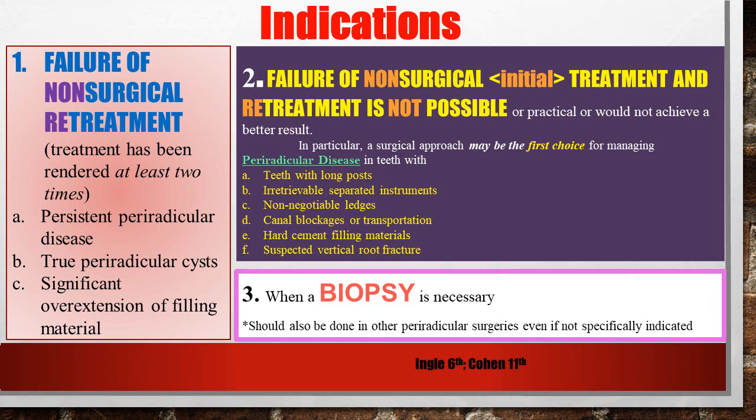Hard cement filling materials: if you have used MTA or Biodentine for apexification or apexogenesis and the patient comes back after 10–15 years with a large lesion, it won't be possible to go through MTA or Biodentine as they are very hard materials. Vertical root fracture is listed as an indication for surgery; however, if the fracture has extended to the tip of the root, the prognosis is very poor and extraction with replacement is more appropriate. When a biopsy is necessary — to check the nature of a periapical lesion — you can perform periradicular surgery to obtain a tissue sample.